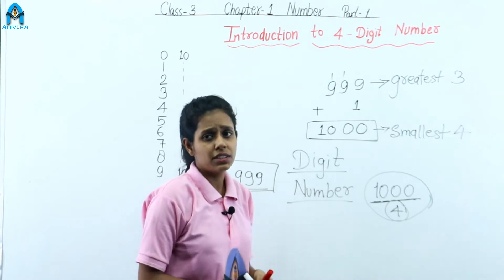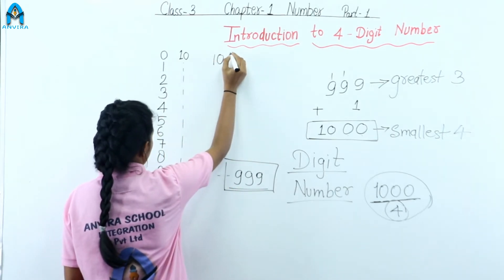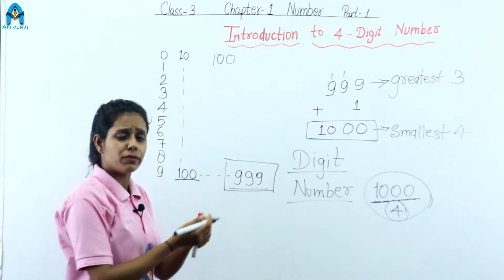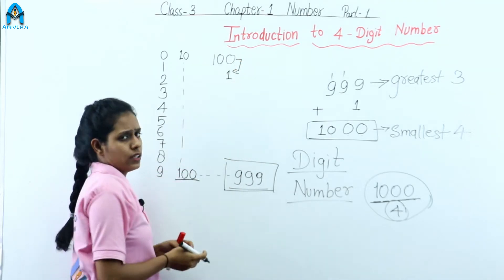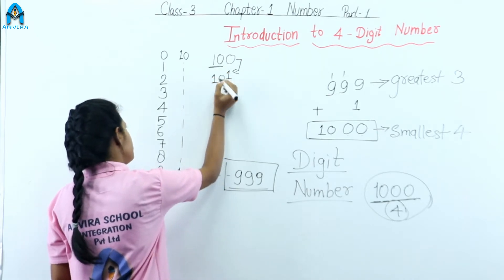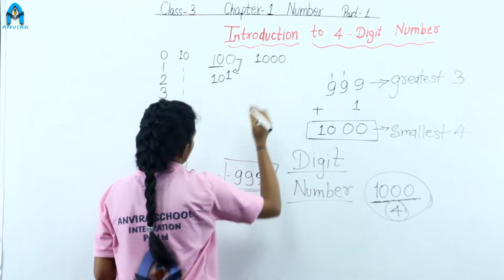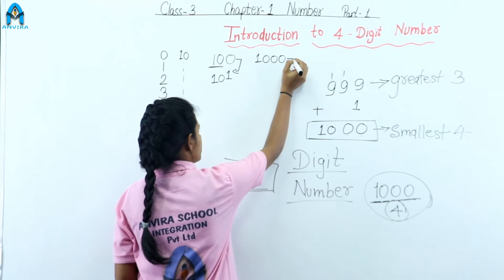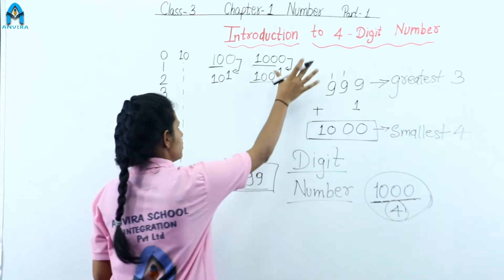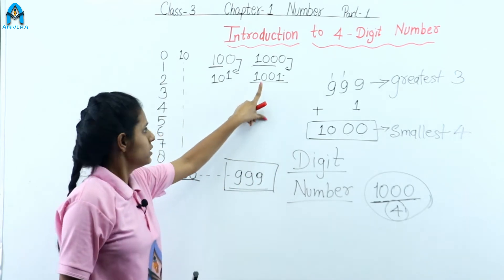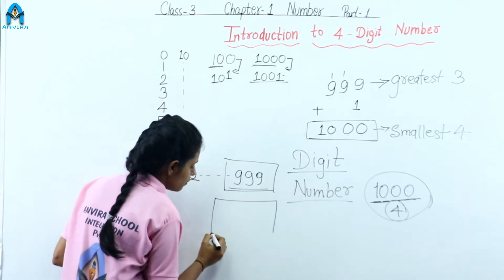So what comes after 1000? Just like after 100 comes 101, the last digit increases by 1 and the rest remain the same. So the next number after 1000 is 1001. Now we have a place chart — a place value chart for 4-digit numbers.